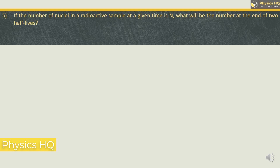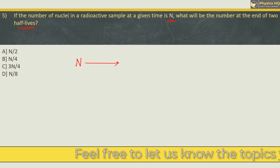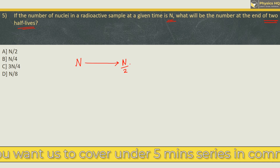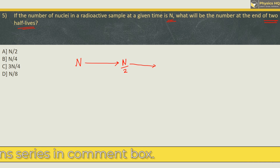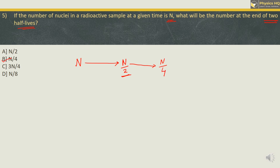If the number of nuclei in a radioactive sample at a given time is N, what will be the number at the end of two half-lives? Options: N/2, N/4, 3N/4, or N/8. After one half-life the number of nuclei remaining is N/2. After another half-life the amount remaining will be half of N/2, which is N/4. For example, starting with 100: after one half-life we get 50, after the second we get 25, which is 100/4. The correct option is N/4.